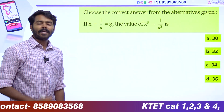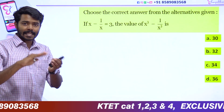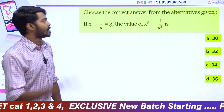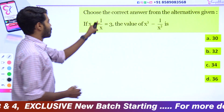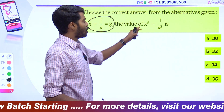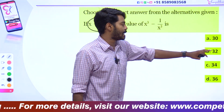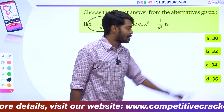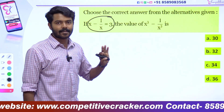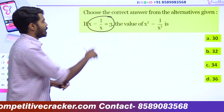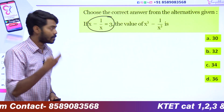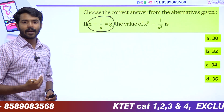In the second question, choose the correct answer from the alternatives given. If x minus 1 by x is equal to 3, then find the value of x³ minus 1 by x³. Option A: 30, option B: 32, option C: 34, option D: 36. If you are looking at this, you will find x plus 1 by x equals 3.